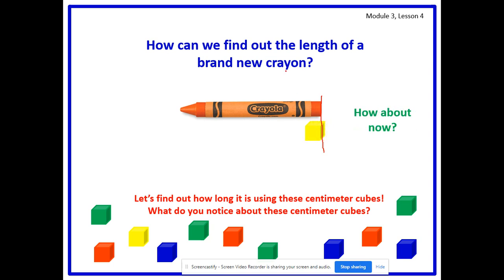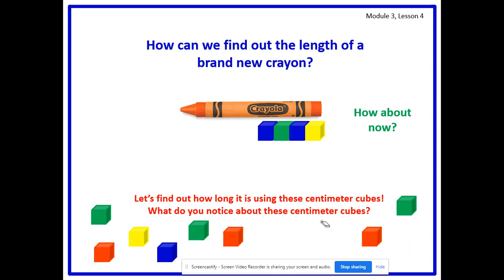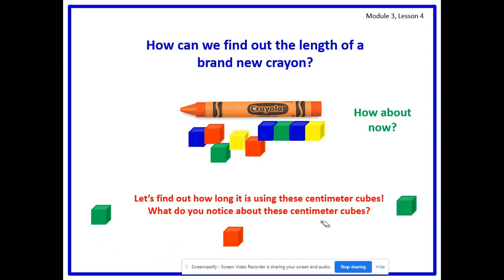There we go. Now are my endpoints aligned? Yes. Now we can continue counting to see how many centimeter cubes long this crayon is. Two centimeter cubes. Three centimeter cubes. Four centimeter cubes. Five centimeter cubes. Six centimeter cubes. Seven centimeter cubes. Eight centimeter cubes. Nine centimeter cubes. Ten centimeter cubes. So my crayon is ten centimeter cubes long.